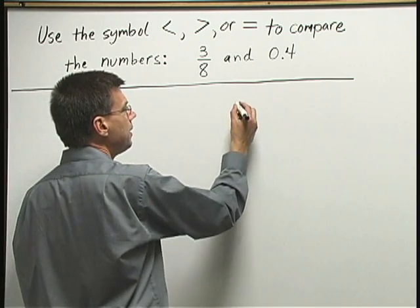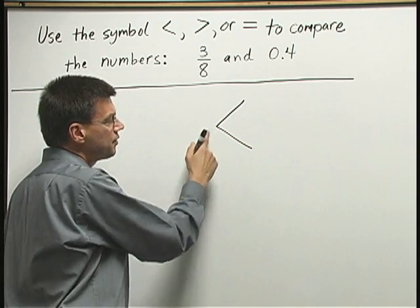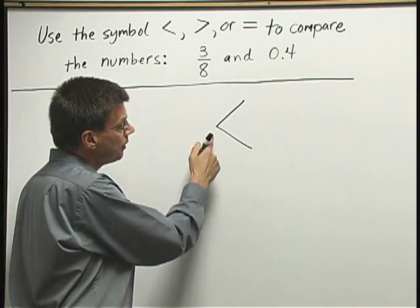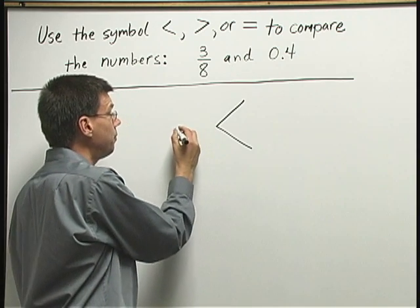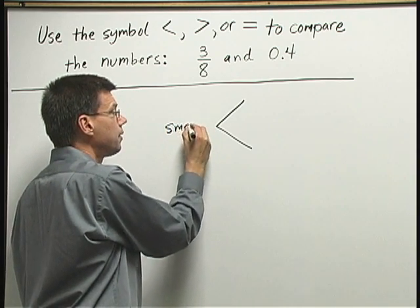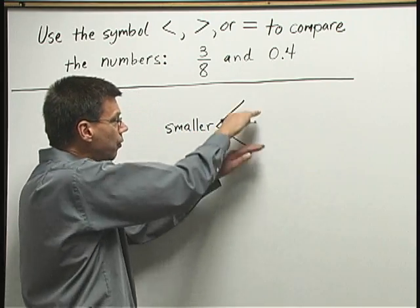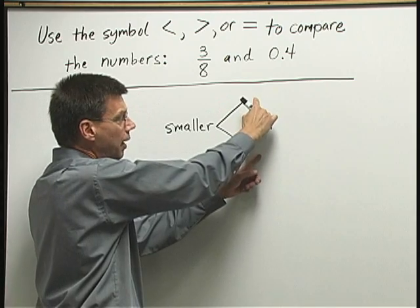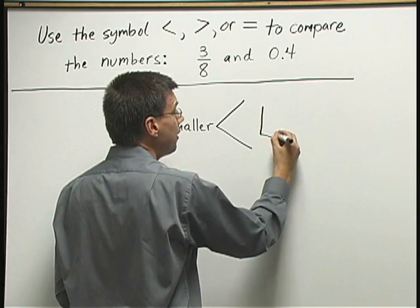When I write this symbol, the small, pointy end of the symbol at this end should be next to the smaller number. So the smaller number would go on this side. The wide-open, spread-apart end of the symbol should be next to the larger number.